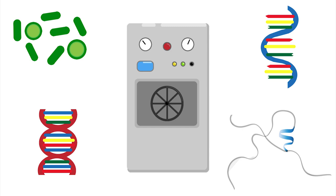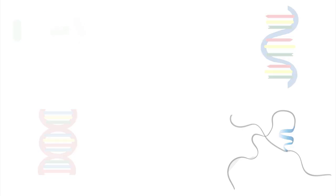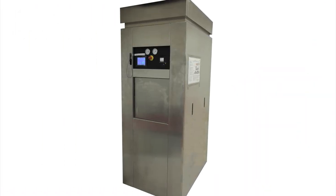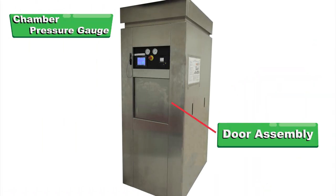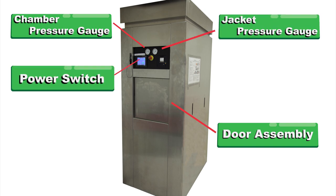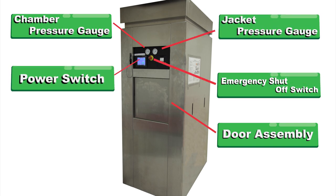To better understand how steam autoclaves work to sterilize materials, let's take a look at a modern large capacity autoclave, such as this one. We can see the door assembly, chamber pressure gauge, jacket pressure gauge, power switch, emergency shutoff switch, and control panel.